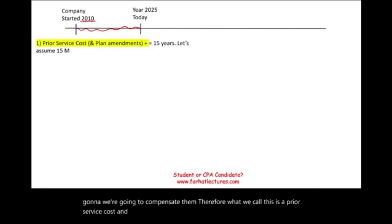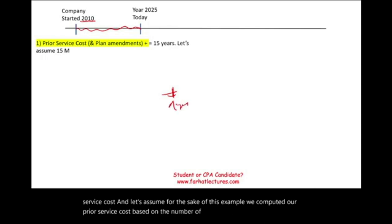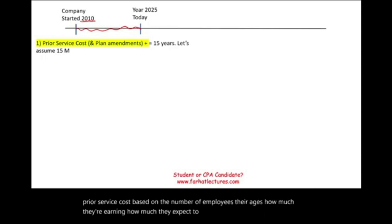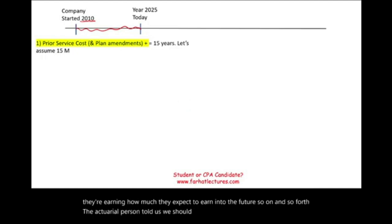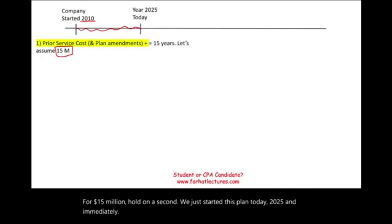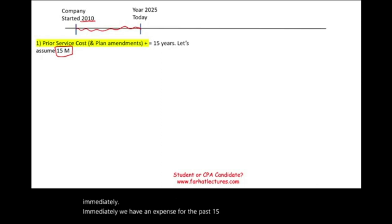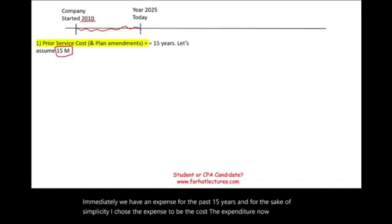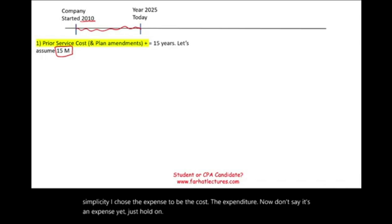For the sake of this example, we computed our prior service cost based on the number of employees, their ages, how much they're earning, and how much they expect to earn in the future. The actuarial person told us we should be responsible for $15 million. We just started this plan today in 2025, and immediately we have a cost for the past 15 years. Are we going to expense $15 million today? No. We're going to debit OCI — Other Comprehensive Income.